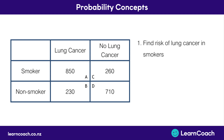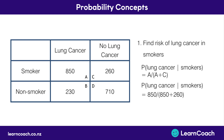An easy way to do this is to label your table with cells A, B, C, and D. To find the risk of lung cancer in smokers, we use the probability of lung cancer given they were smokers — that's cell A divided by the total number of smokers, which is A plus C. Plugging in our numbers: 850 divided by 850 plus 260, which gives us 0.766.